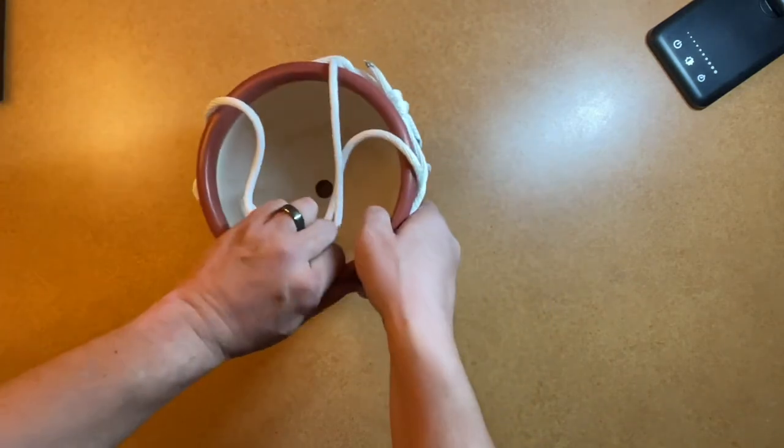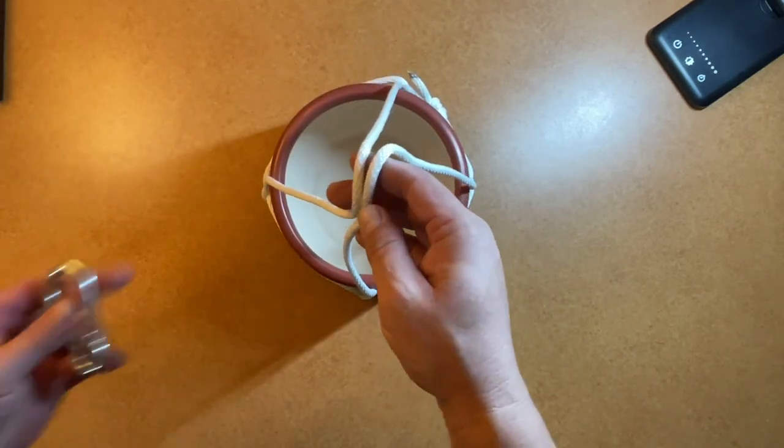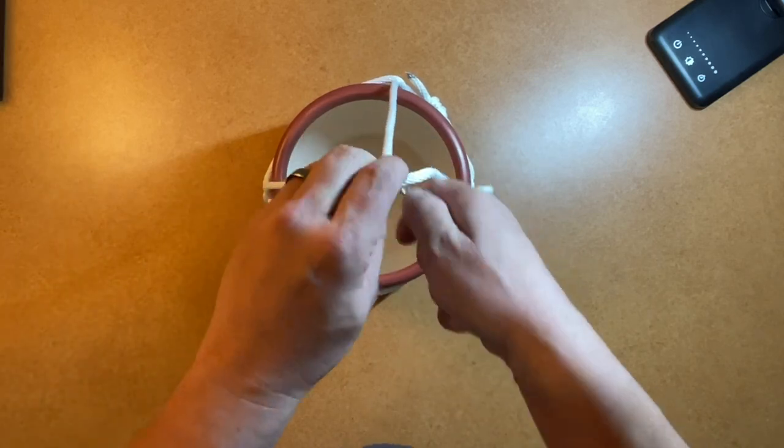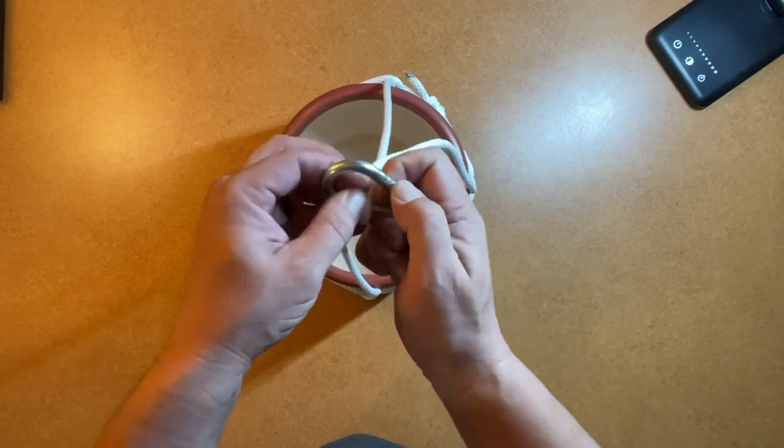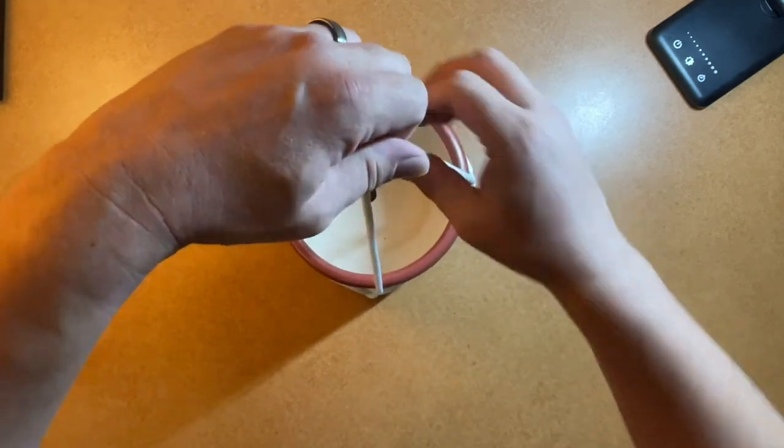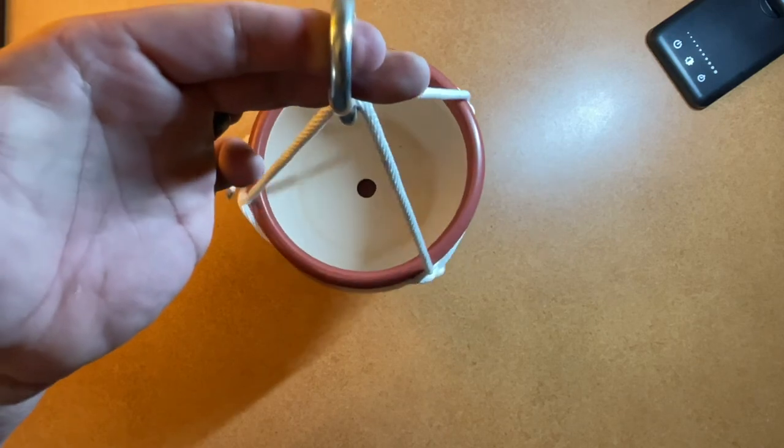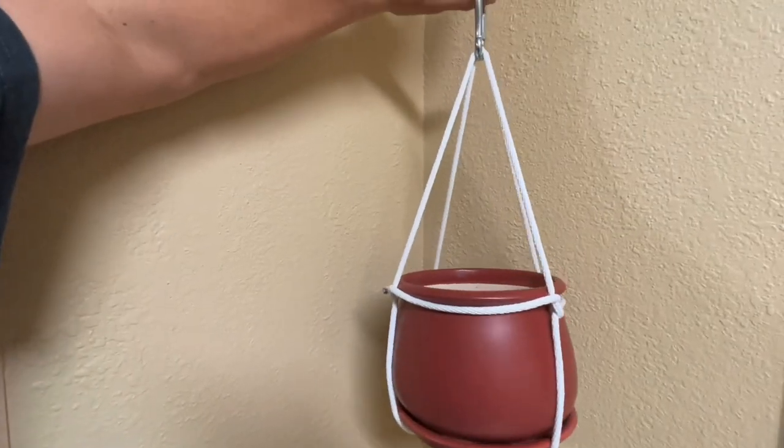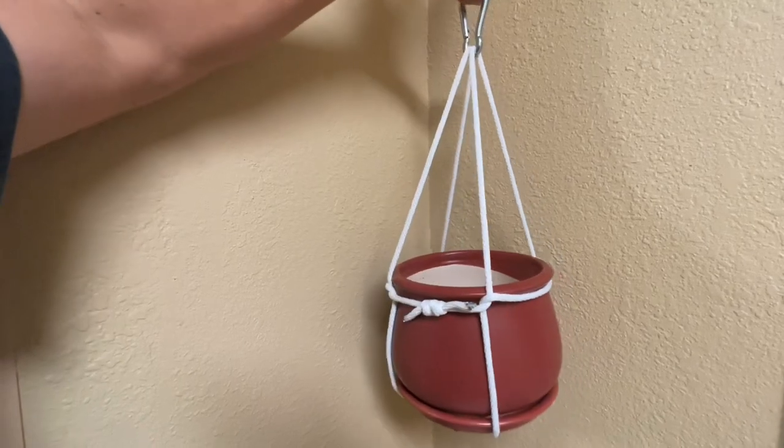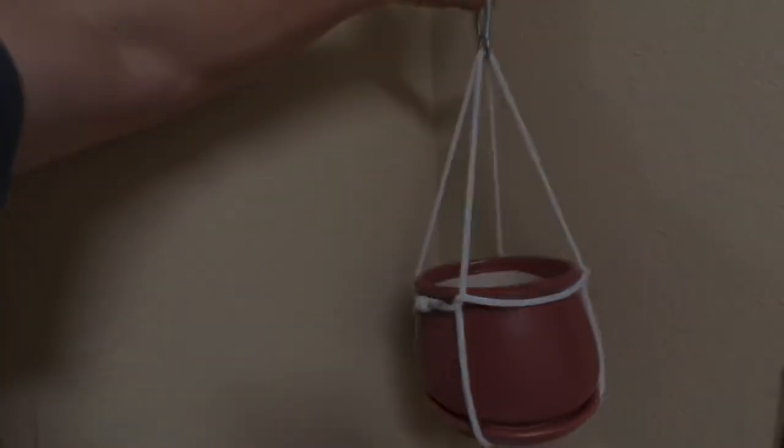Now all we have to do is add a little carabiner to this. Get that set in there and now we are ready to go. The name of this knot is called the barrel sling and it's perfect for doing small projects like this one. As always, I appreciate you guys watching and I'll see you in the next one.